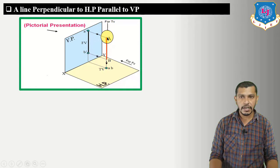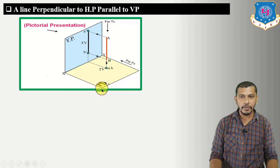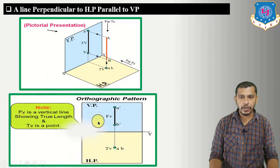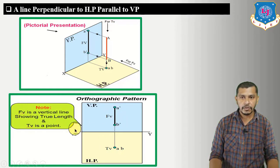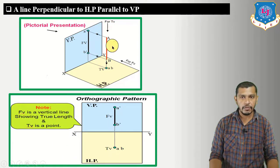To draw the elevation, we draw projection lines perpendicular to VP from A and B, getting A-dash and B-dash. Connecting them gives the front view. After rotating the horizontal plane 90 degrees clockwise, the orthographic view shows: the top view or plan of the line is a point, and the elevation A-dash B-dash is perpendicular to the XY reference line and gives the true length.